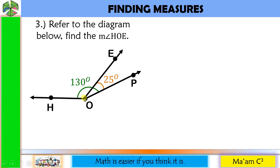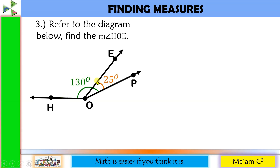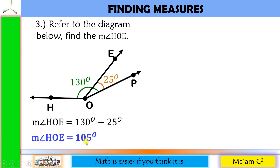Another one: We are asked to solve for the measure of angle HOE. The measure of angle HOP is 130 degrees, while the measure of angle EOP is 25 degrees. 130 degrees is the total measure of these two adjacent angles — they share a common ray and a common vertex. So we subtract 25 from 130, giving us 105 degrees. Adding 25 back gives us the total measure of 130 degrees.